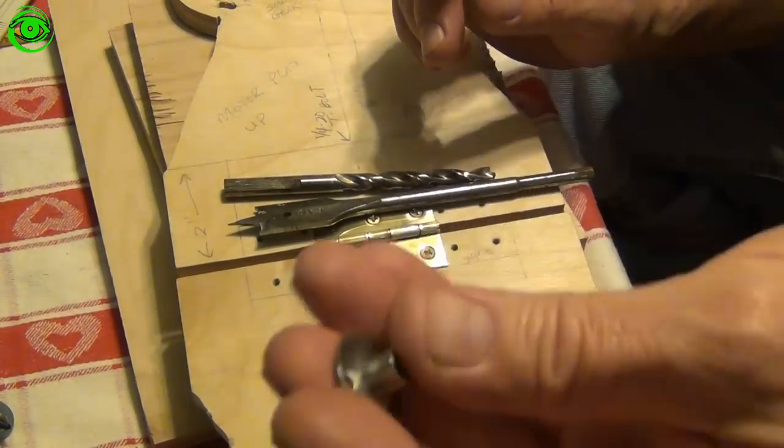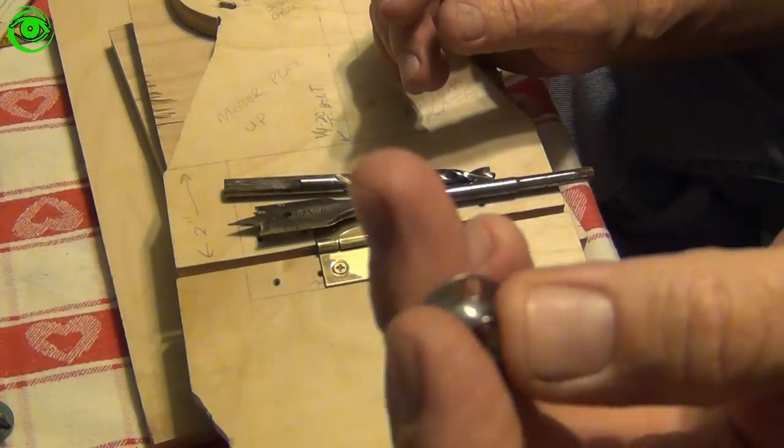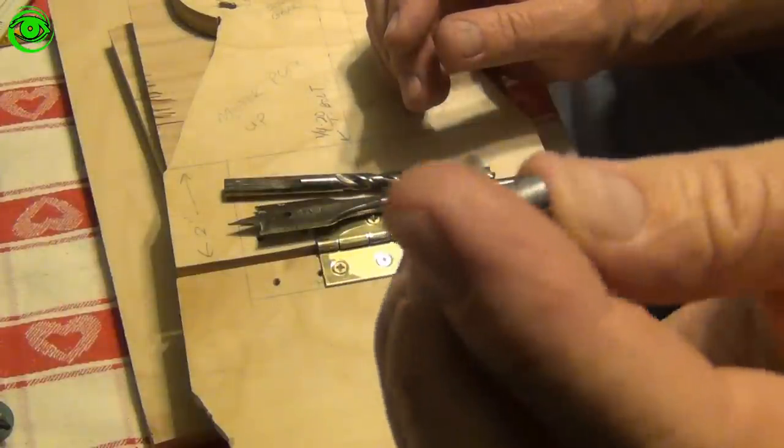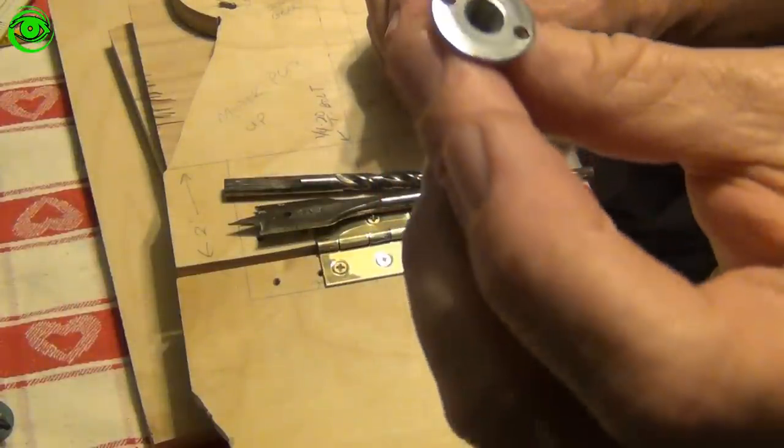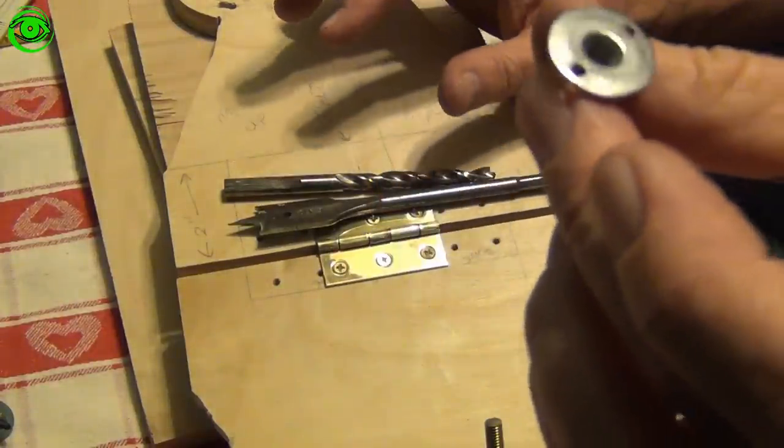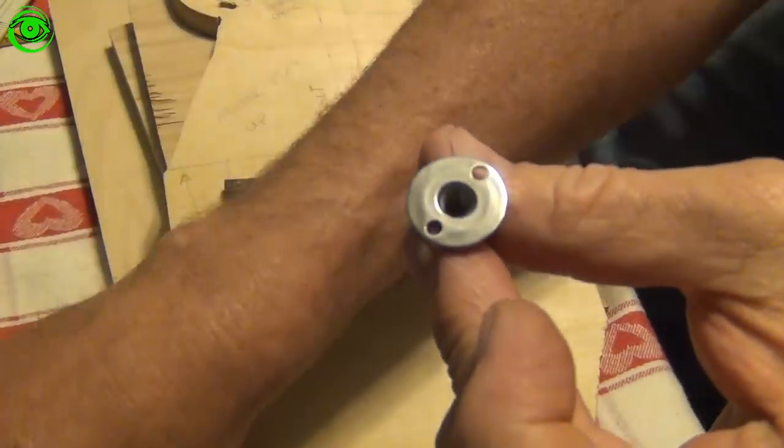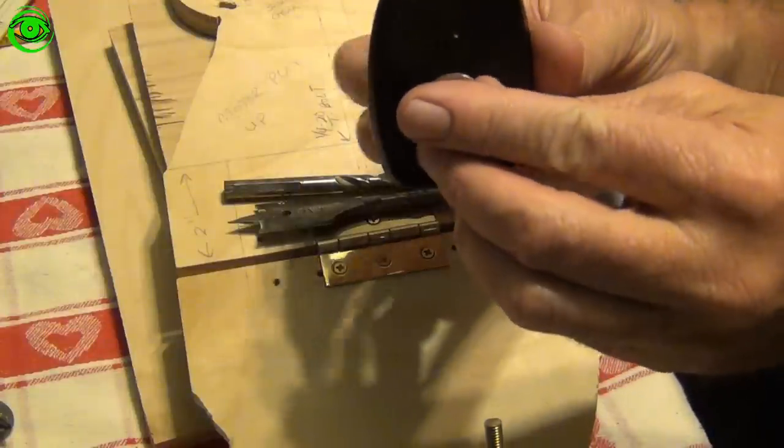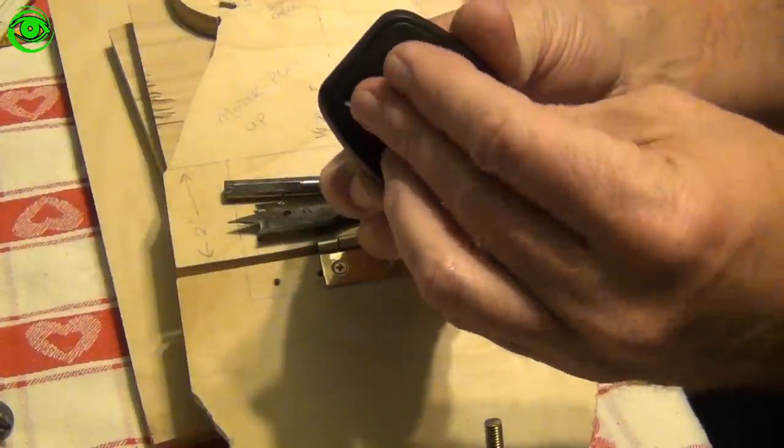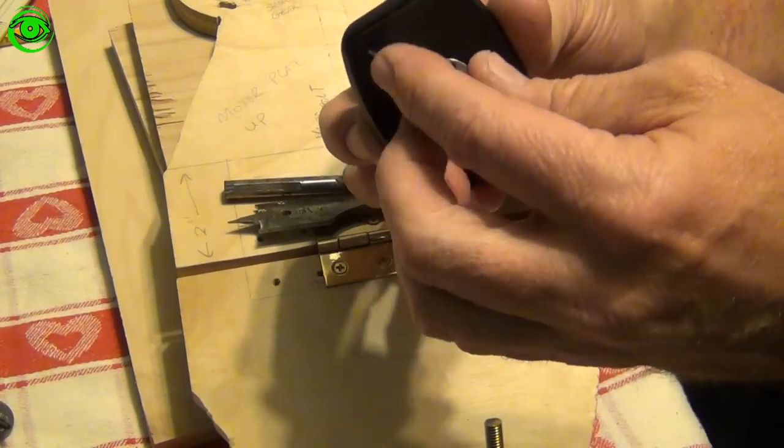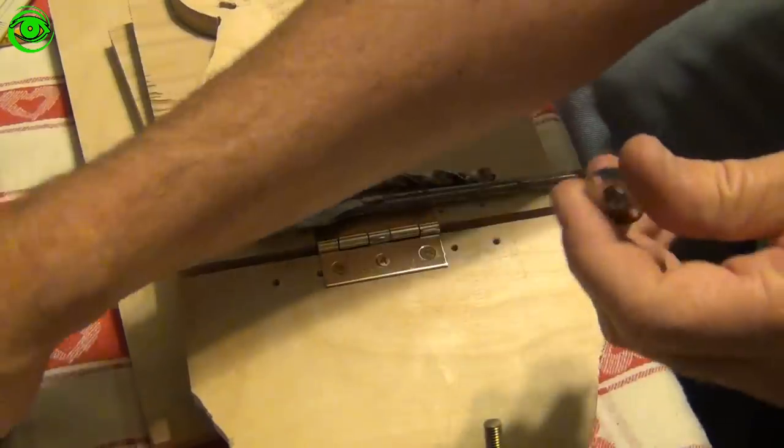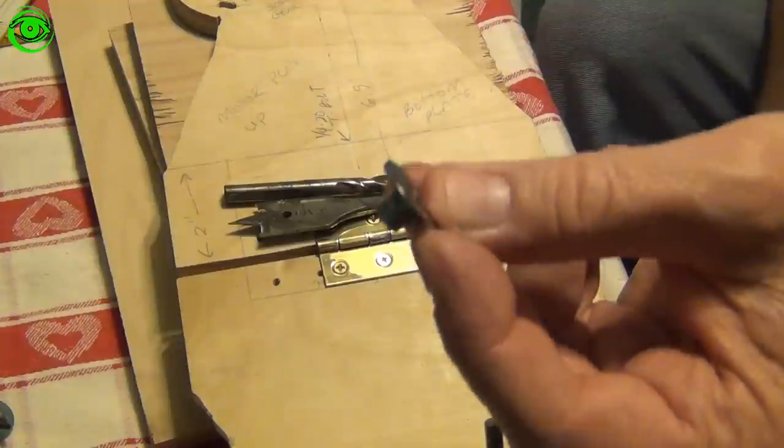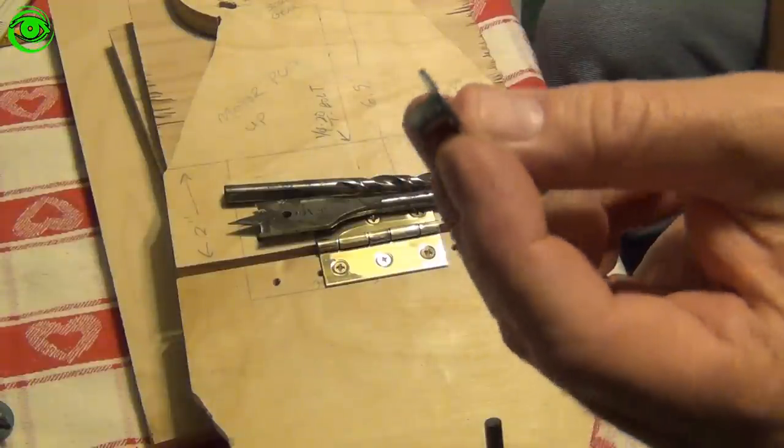This piece right here is the quarter by 20 T nut that we need. And what this job is, is to hold everything down onto your tripod plate. There's not very much thread that actually grabs onto that. So this step is going to be very, very important. This is basically the only thing that's going to keep it from falling off of your tripod.